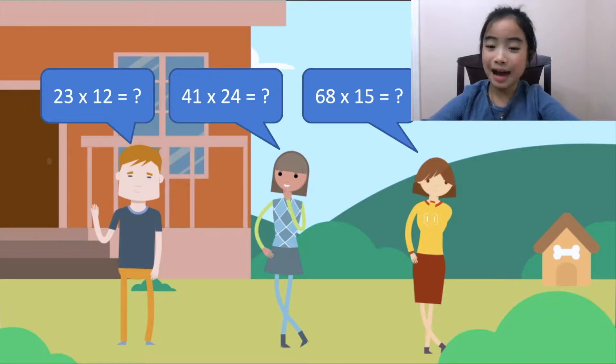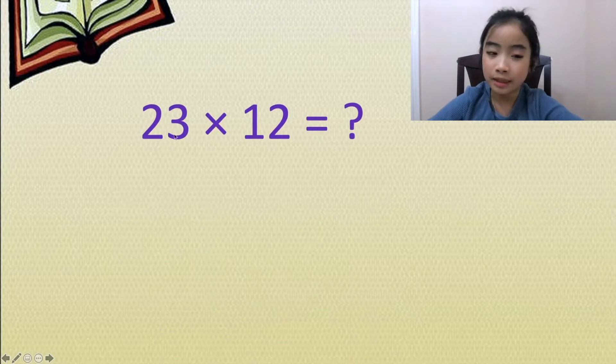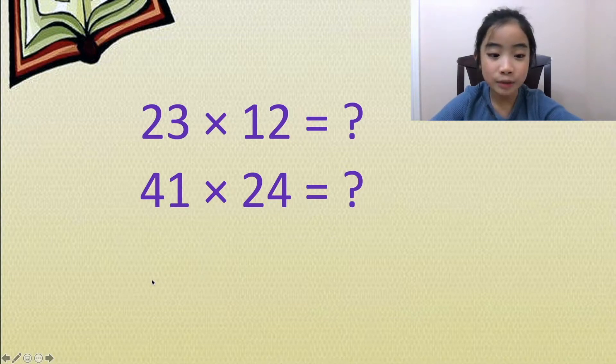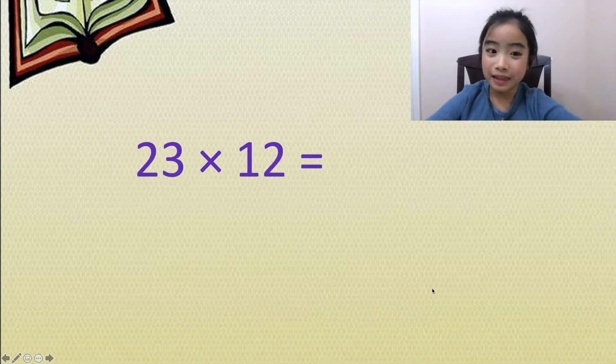So that's my problem. I don't know how to multiply two-digit numbers, and also I have to do it fast. And for the game, we can't use a calculator. Okay, so let's go through the questions again. The first question was 23 times 12. The second question was 41 times 24. And the last question was 68 times 15. Let's figure this out.